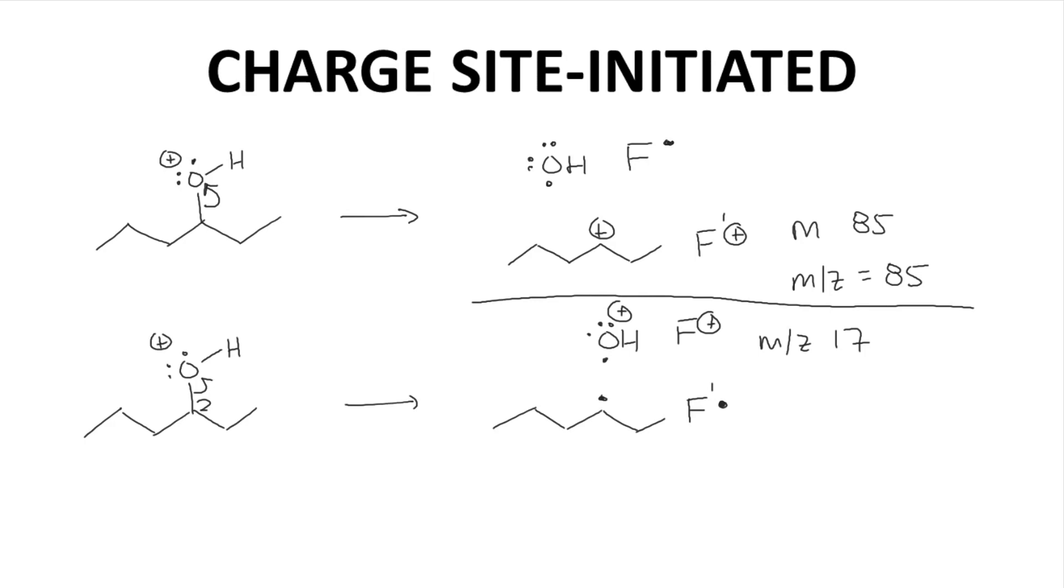Which of these will happen? It depends. Both could happen, or maybe one would be favored. It depends on the relative stabilities of the fragment radicals and fragment cations. So in the mass spectrum, you might observe one, or both, or neither of these cations. It just depends on their relative stabilities.